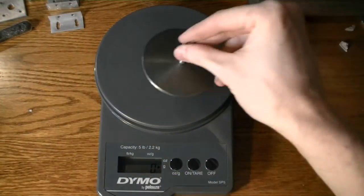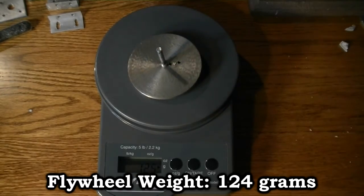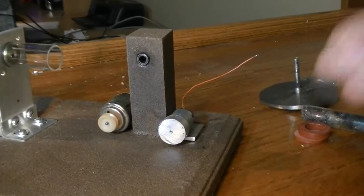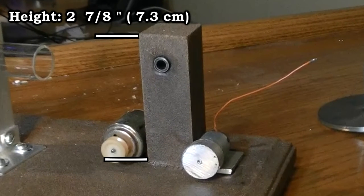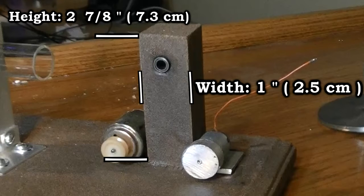The weight of the whole flywheel is 124 grams. Let's take a look at the flywheel support column. This support column is made out of wood and is two and seven eighths of an inch tall. It is a square piece of wood. Each side is one inch wide.